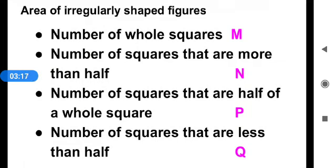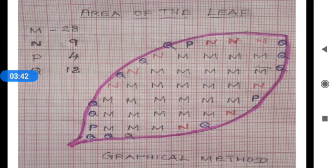So, to summarize: the number of whole squares is denoted by the letter M; the number of squares that are more than half is denoted by N; the number of squares that are half of a whole square is denoted by P; and the number of squares that are less than half is denoted by Q. In this outline of the leaf, count the number of whole squares M, then squares more than half N, squares half of a whole square P, and finally squares less than half Q.